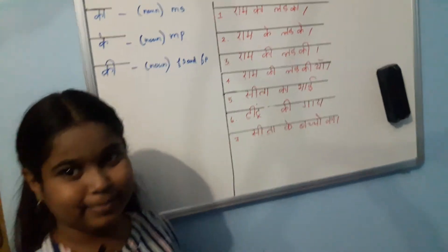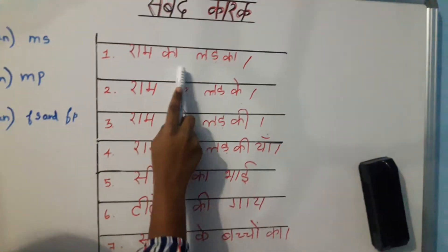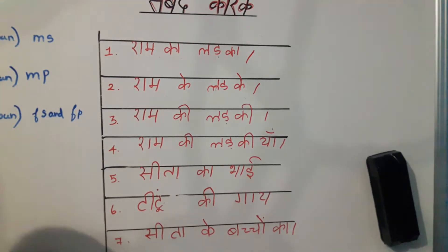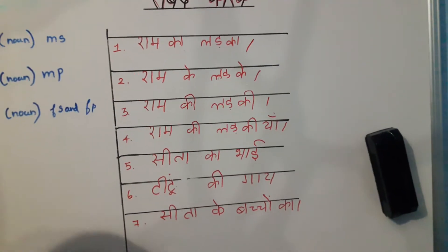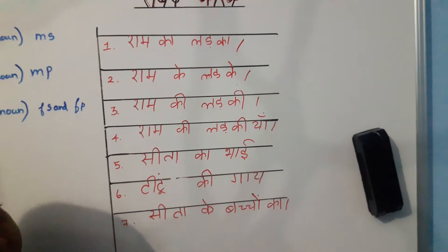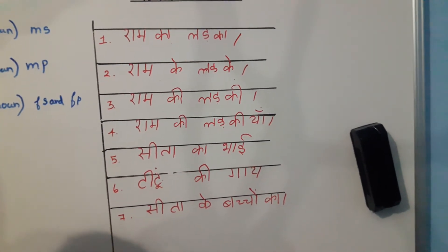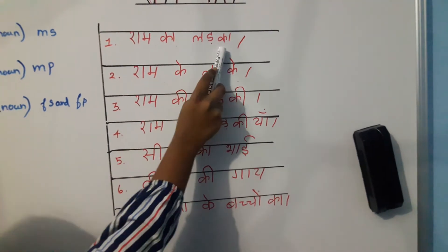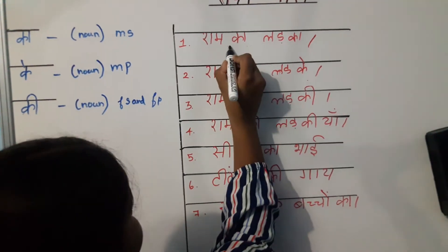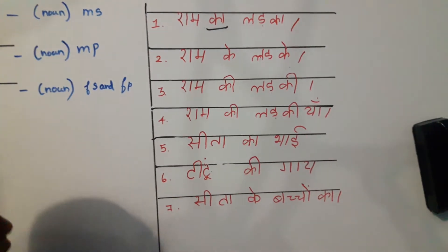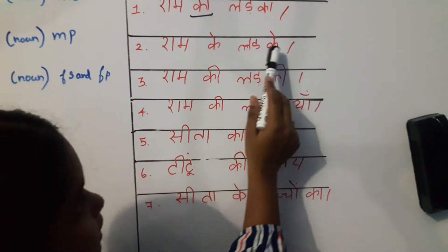Let me give you examples. Ram Kha Ladu Kha — meaning Ram's son. Here 'Ladu Kha' means boy, which is masculine singular, so 'Kha' is used.